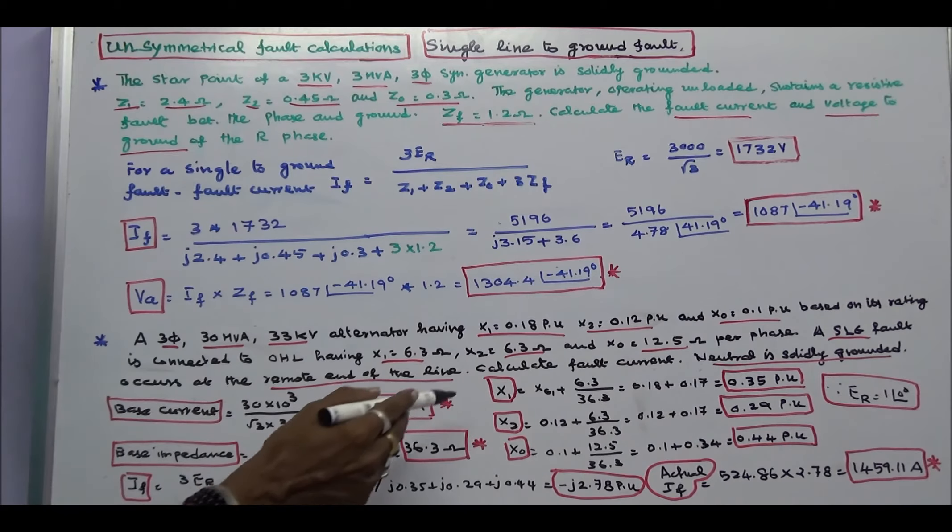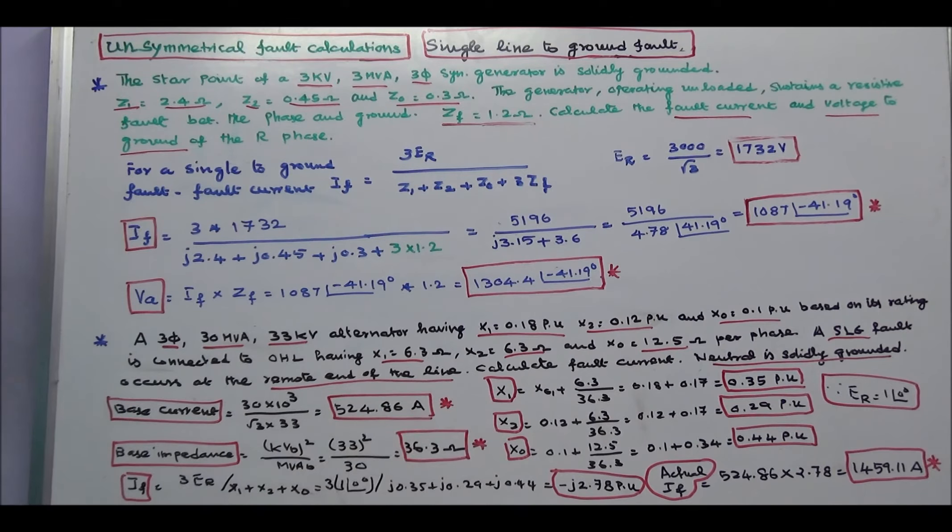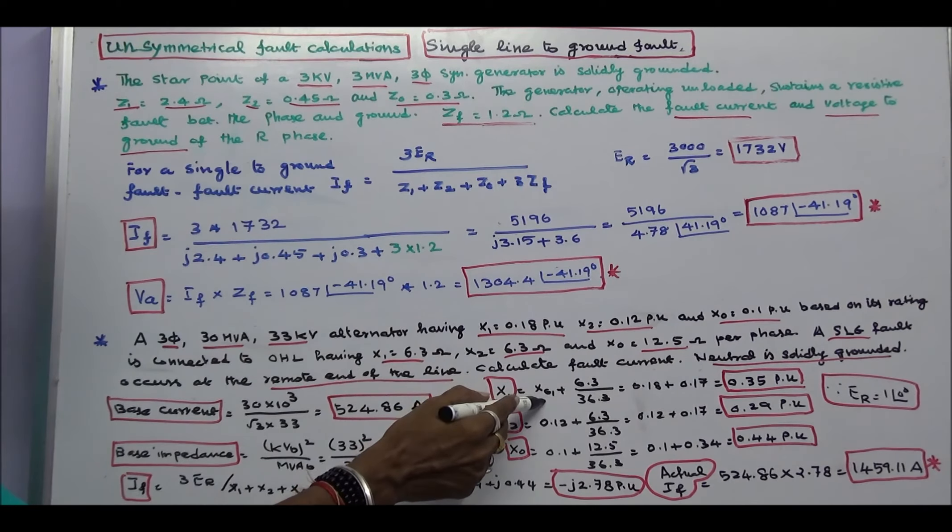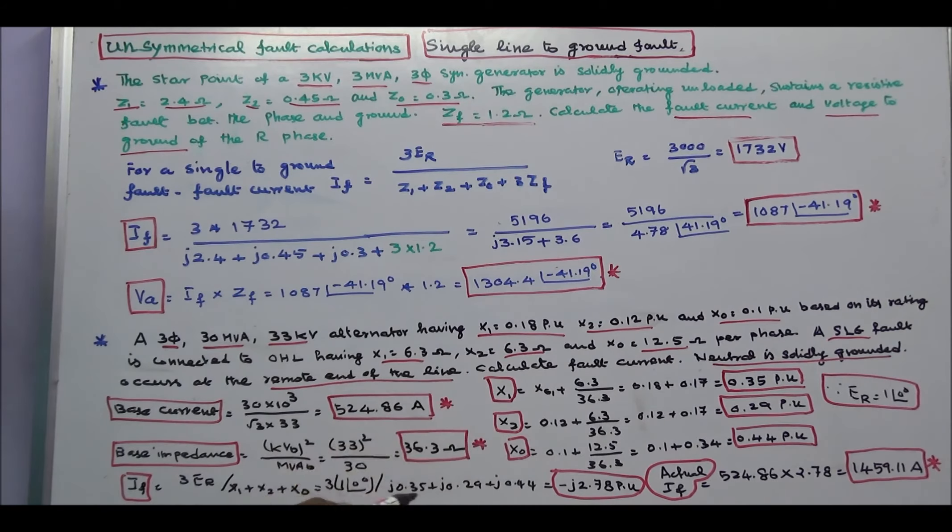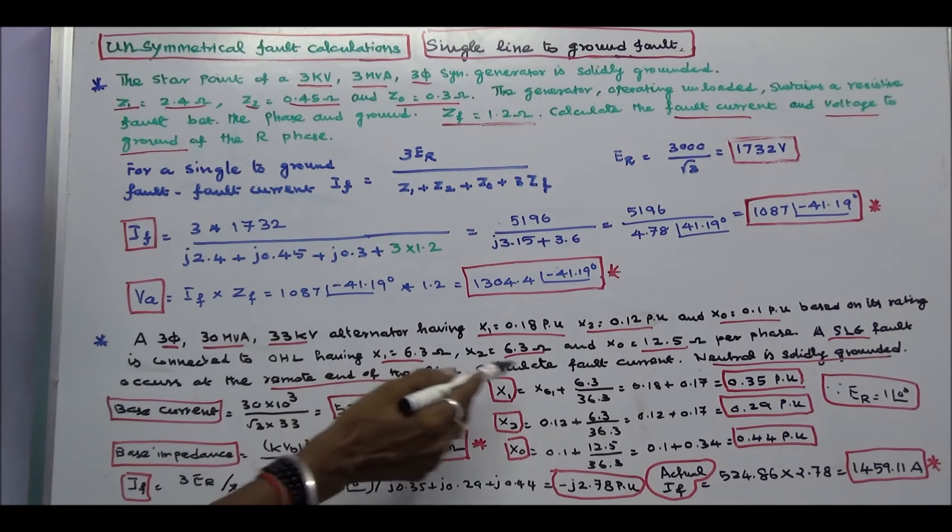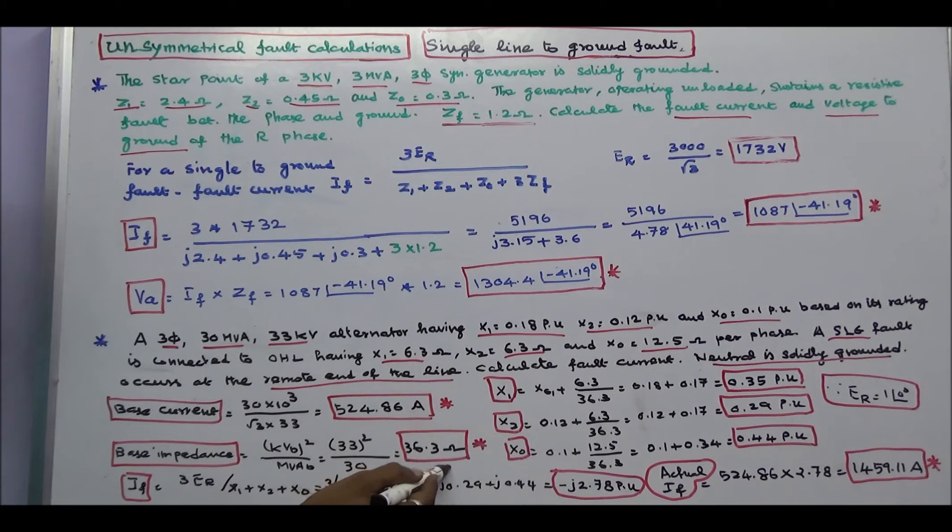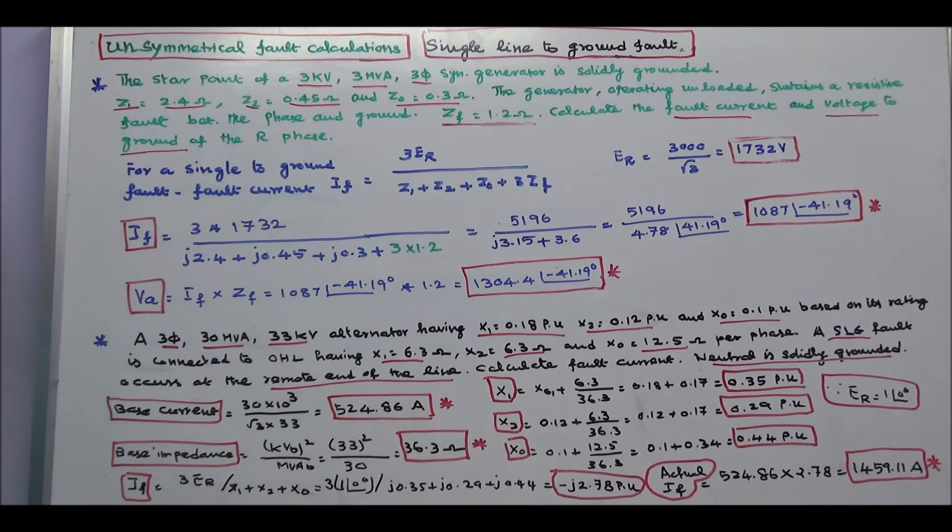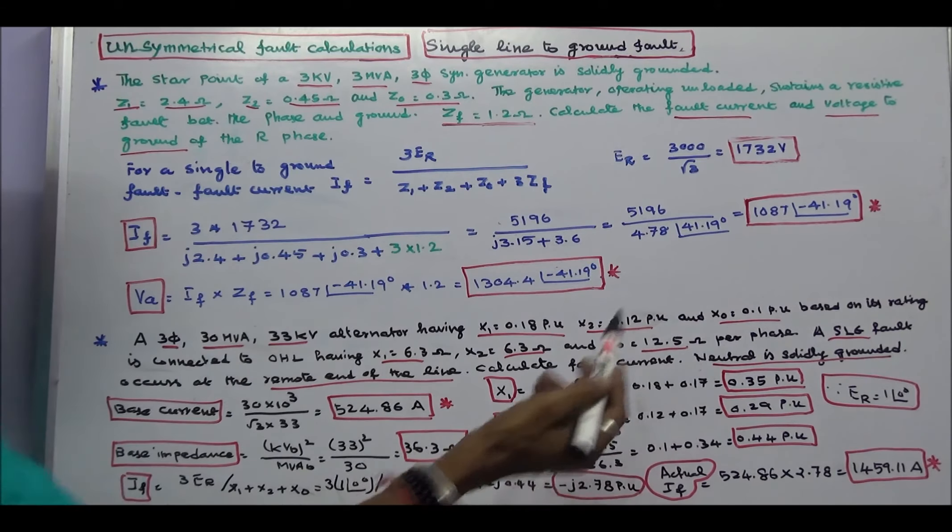The next step, we have to calculate the total positive sequence, negative sequence, zero sequence reactance. X1 is equal to generator reactance that is 0.18 plus actual by base. Actual is 6.3 divided by base is 36.3. X1 is equal to 0.35 per unit. Similarly, X2 is equal to 0.29 per unit. X0 is equal to 0.44 per unit.